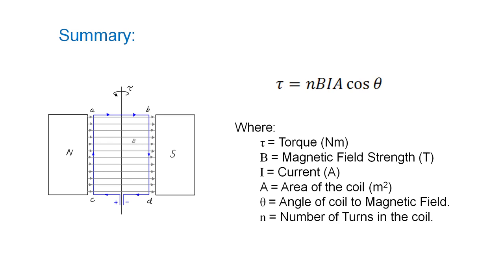Summary. The torque acting on a current carrying coil in a magnetic field can be calculated from the equation TAU equals NBIA cos theta, where TAU is the torque in newton meters, B is the magnetic field strength in Tesla, I is the current through the coil in amps, A is the area of the coil in meters squared, theta is the angle between the plane of the coil and the magnetic field, and N is the number of turns in the coil.